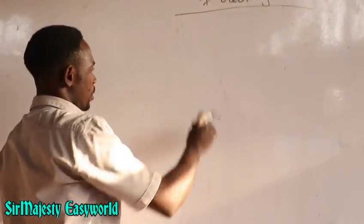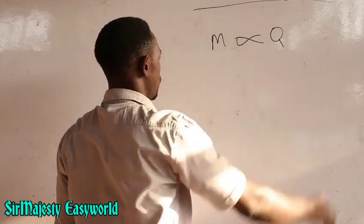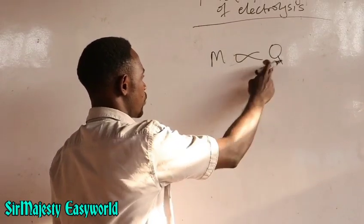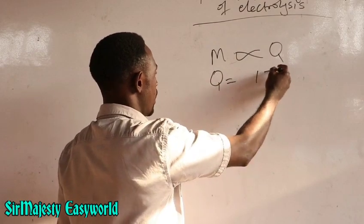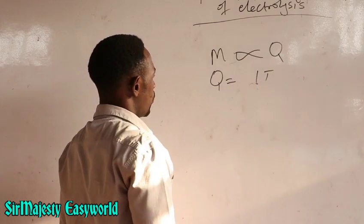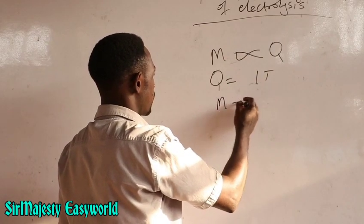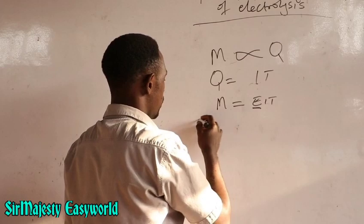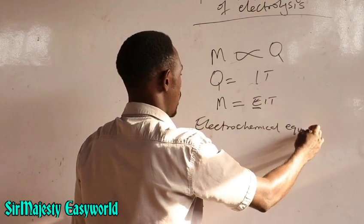By equation, the First Faraday Law states that the mass of an element discharged during electrolysis is directly proportional to the quantity of charge supplied — in other words, the quantity of electricity supplied. Mass M is proportional to quantity Q. To remove the sign of proportionality, we introduce a constant E, so M equals E×Q, where E is called the electrochemical equivalent.